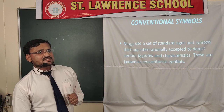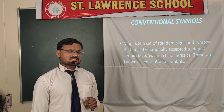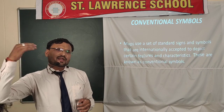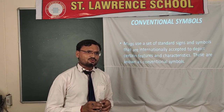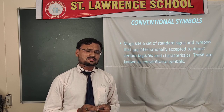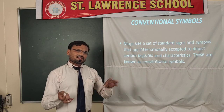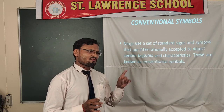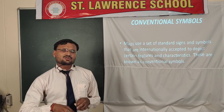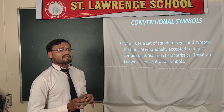The next point is conventional signs and symbols. Conventional signs and symbols are internationally accepted signs and symbols used throughout the world in maps. The maps prepared in India, USA, or any other country use the same signs internationally. For example, if we represent a river on a map, the same symbol is used in both an Indian map and a US map — those are known as conventional signs and symbols.